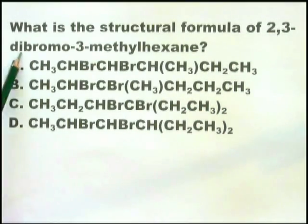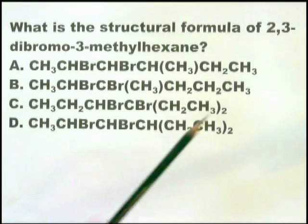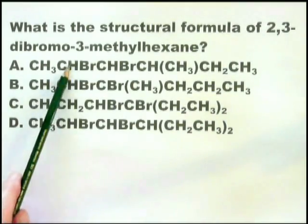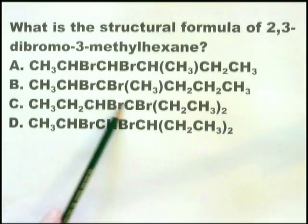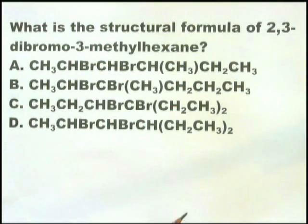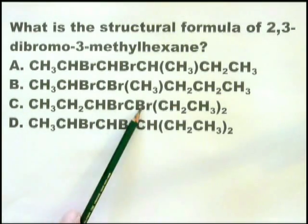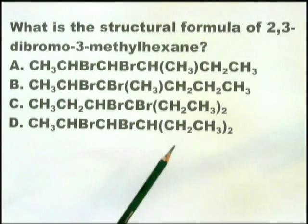The other approach is 2,3-dibromo. Let's look for two bromos on adjacent carbon atoms. And lo and behold, there's one there, there, there, and there. So they don't help you, except that this one possibly is on the three, four carbon rather than two, three. So you're only eliminating one.